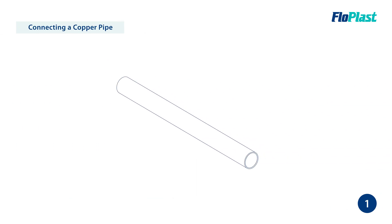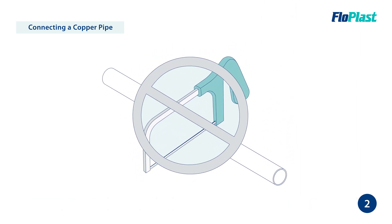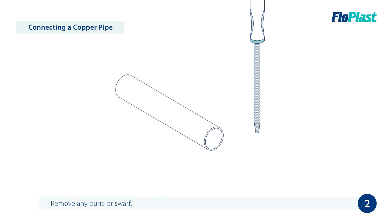For copper pipe installation, as with plastic pipe, measure and mark the required length. Cut the copper pipe using a rotational pipe cutter. Again, do not use a hacksaw. To reduce the risk of leaks, ensure you remove any burrs or swarf.